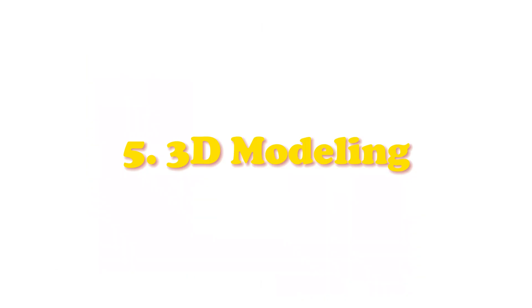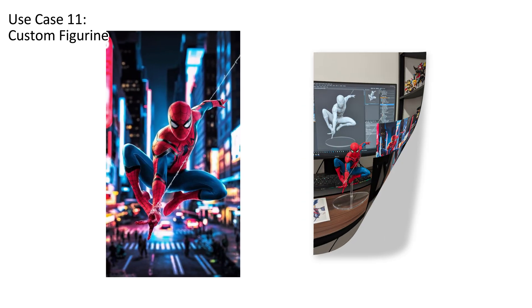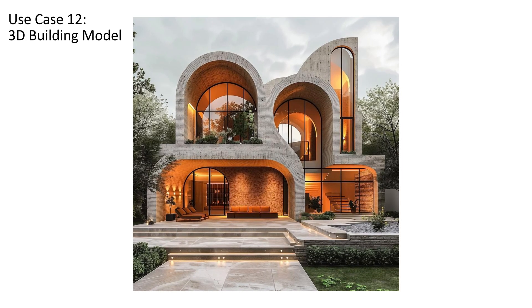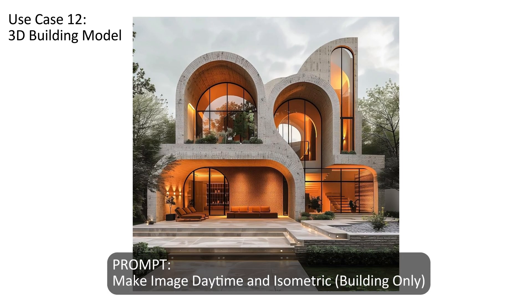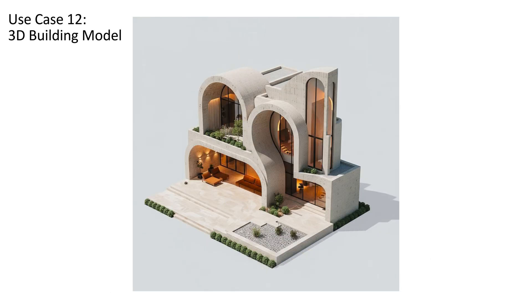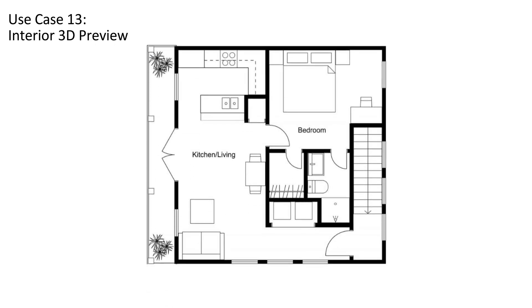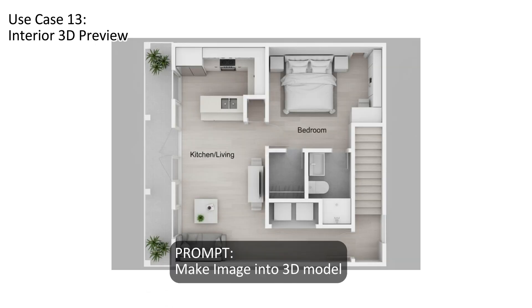Category 5: 3D Modeling. Nano Banana is super popular for making custom figurines, but it also works for architecture. Upload a photo of a house and you'll get a 3D side-view model. Or upload an interior floor plan, and Nano Banana can generate a full 3D preview of the layout.